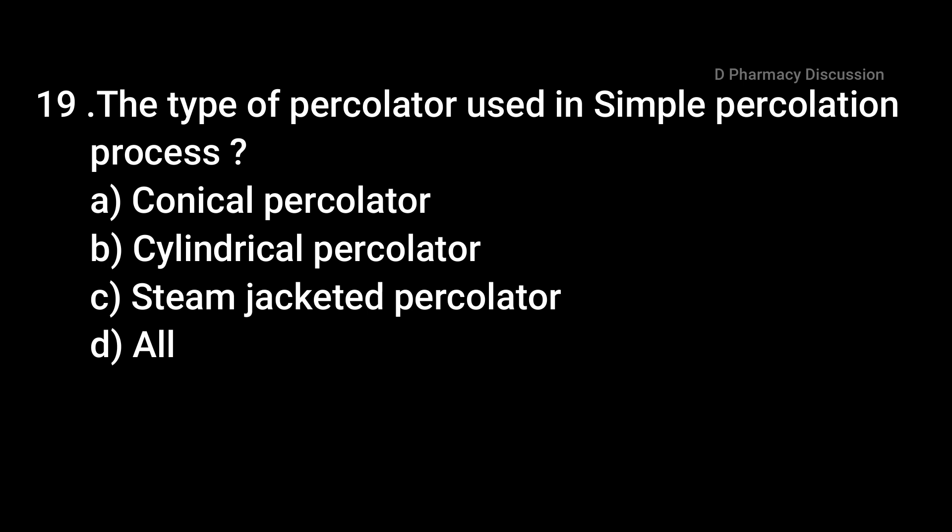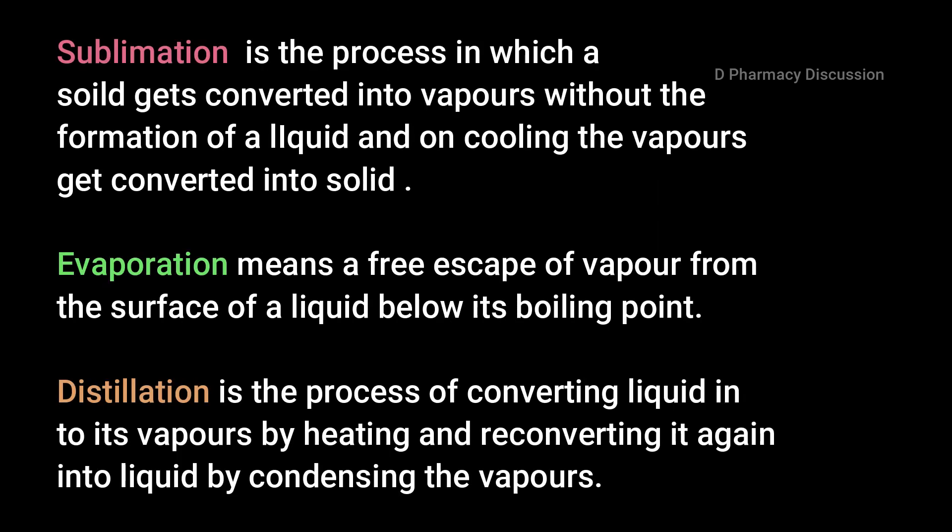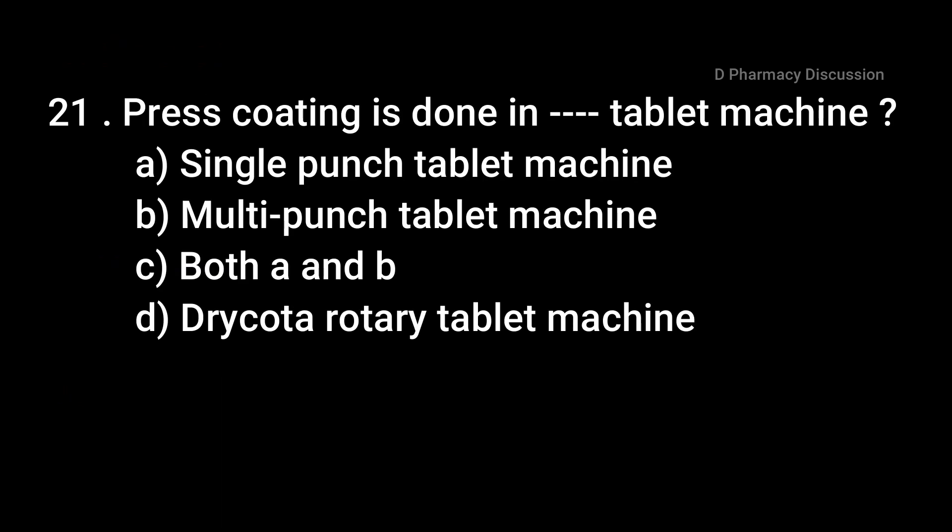Question 19: The type of percolator used in a simple percolation process is. Option A: conical percolator, B: cylindrical percolator, C: steam-jacketed percolator, and Option D: all. Correct answer is Option D, all. Question 20: Dash is the process of complete removal of mechanically admixed water from a substance. Option A: desiccation, B: sublimation, C: evaporation, and Option D: distillation. Correct answer is Option A, desiccation. Sublimation is when a solid converts to vapor without forming a liquid, and on cooling the vapor converts back to solid. Evaporation is the free escape of vapor from the surface of a liquid below its boiling point. Distillation is converting liquid into vapor by heating and reconverting it to liquid by condensation.